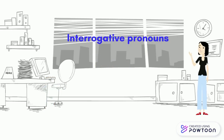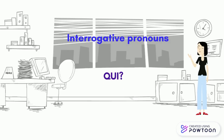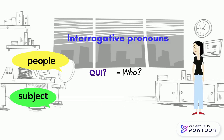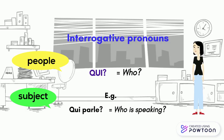There are three interrogative pronouns: « qui », « que » and « quoi ». « Qui » means « who » — it is used to refer to people as the subject of the question. For example, Qui parle? — Who is speaking? You can also say Qui est-ce qui parle?